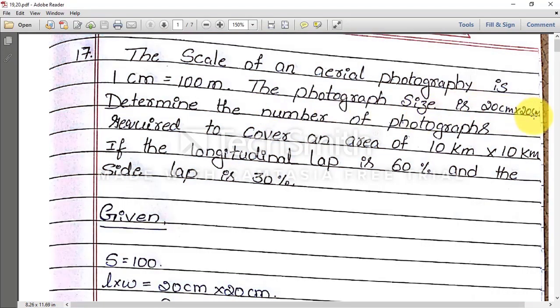Determine the number of photographs required (capital N) to cover an area of 10 km × 10 km (capital L × capital W) if the longitudinal lap is 60% and the side lap is 30% (PL and PW).